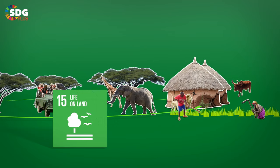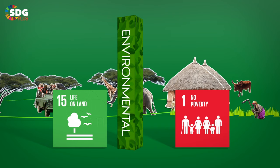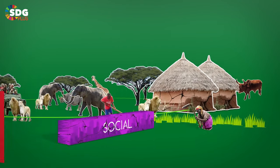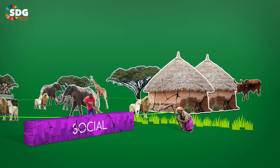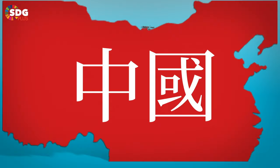In other words, trying to achieve SDG 15 made it more difficult to eradicate poverty. Favouring the environmental pillar meant overlooking the social pillar.